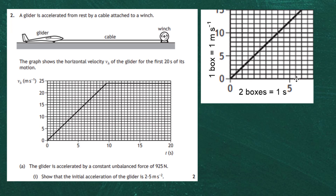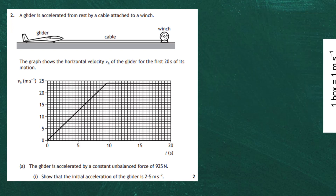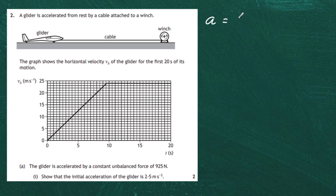To find the acceleration from the graph, we use the fact that acceleration equals the gradient, written as delta v over delta t — change in velocity over change in time. We pick two points on the graph: the first is (0, 0), and the second is at t = 8s where the velocity reads 20 m/s.